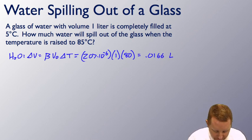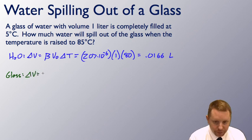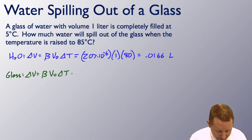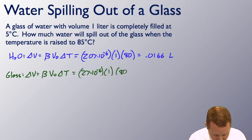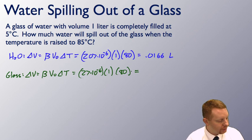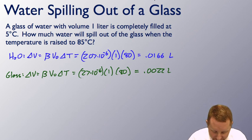Let's do the same for the glass. Change in volume will be beta V0 delta T, which will be 27 times 10 to the minus 6 for glass, times 1 times 80 for a change in volume of about 0.0022 liter.